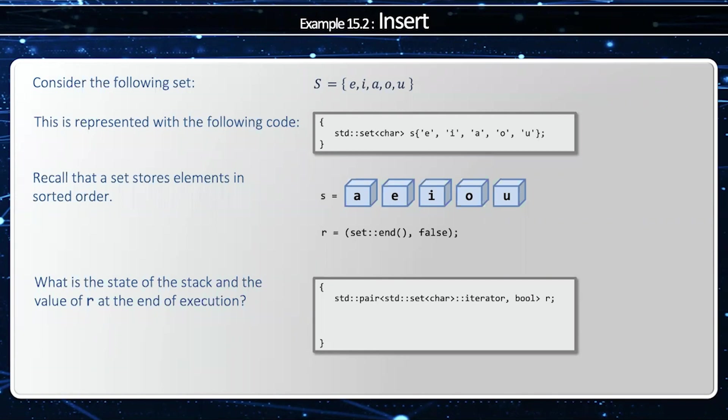I'm also going to have a pair of iterator comma bool, and this can be the return value: an iterator to the element inserted and a bool to see whether I inserted something.